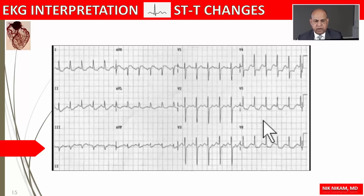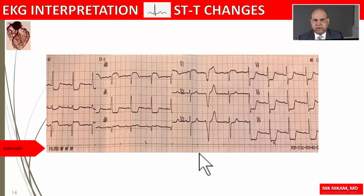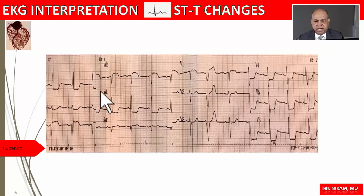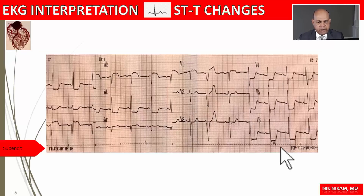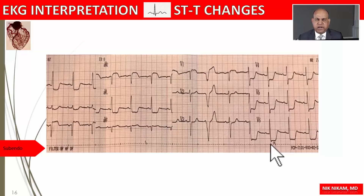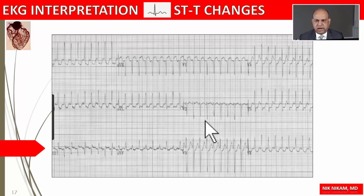Here is another example of dramatic ST depression seen in lead I, aVL, V4 to V6, representing the high anterior wall along with the anterolateral wall — anterolateral subendocardial myocardial ischemia. If this is associated with chest pain and elevated cardiac enzymes, this definitely represents subendocardial myocardial infarction in the anterolateral region of the left ventricle.